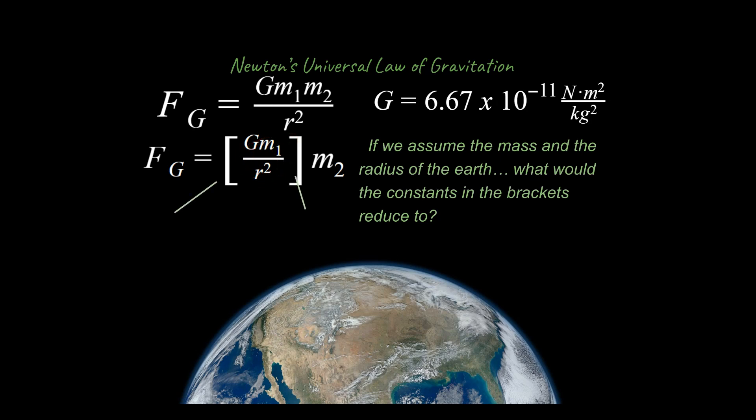All right, well, what this would reduce to is 9.81 meters per second squared. In other words, that is where this comes from. It comes from this equation under the special circumstance of if we're dealing with the surface of the Earth. In other words, if we take this general equation and plug in the radius of the Earth, the mass of the Earth, and this gravitational acceleration, and we simplify this term right here, we end up with 9.81 meters per second squared. And that's how we can come up with this equation over here.